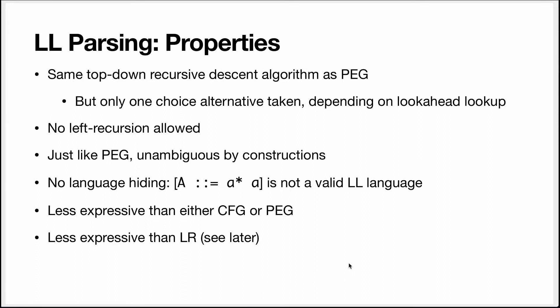Just like PEG parsers, LL parsers are top-down recursive descent parsers, optimized by using lookahead tokens to decide which choice alternative to use without trying alternatives in order. Just like PEG, LL parsers cannot handle left recursion, because that would cause infinite recursion. Just like PEG, they are unambiguous by construction. Unlike PEG, they do not suffer from language hiding — but that's less good than it sounds: a grammar that has language hiding in PEG simply won't be accepted as an LL grammar. The LL formalism is less expressive than any grammar formalism we'll see in this course, except regular grammars — notably less expressive than LR, which we'll see in the next video.